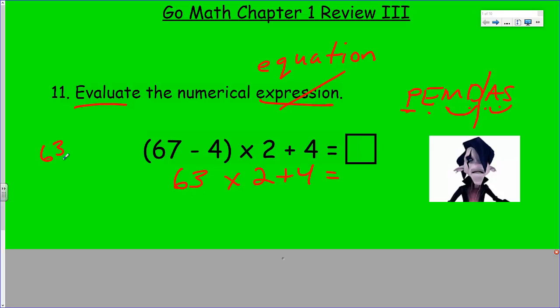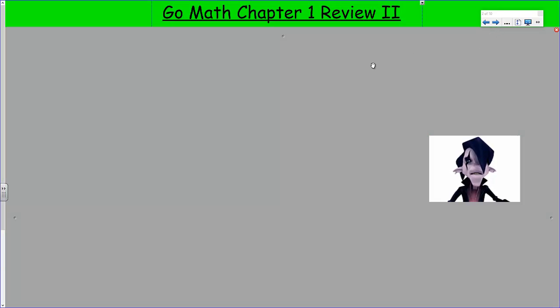We must multiply and divide first, so we take 63 times 2. If we multiply that, we get 126. Now I got plus 4 equals 130. Yes, that's how it works, and I need to make sure that I give you the secret code word.